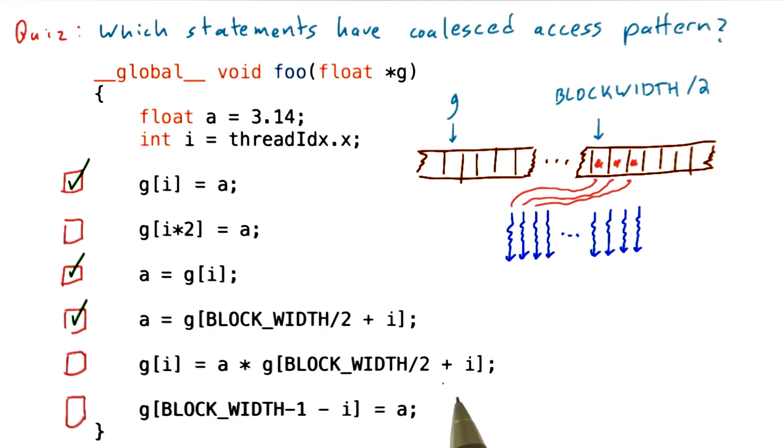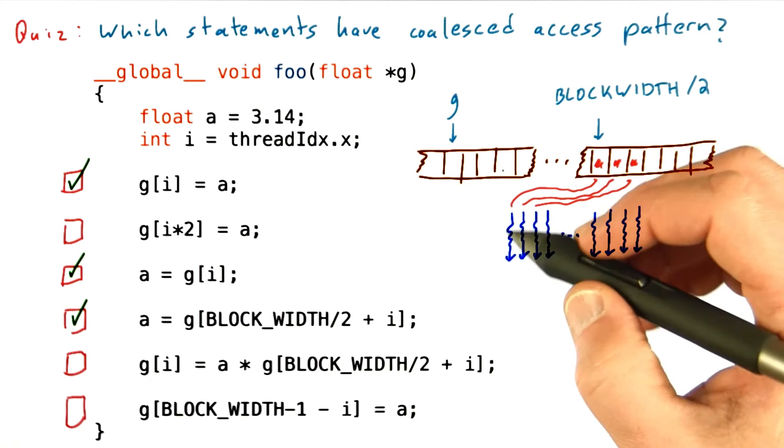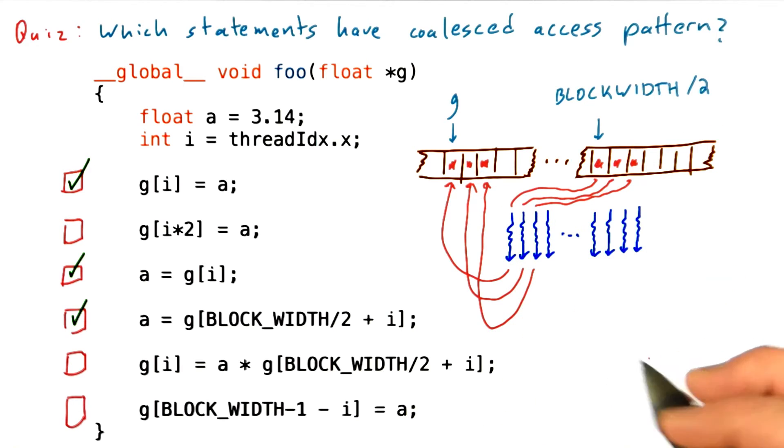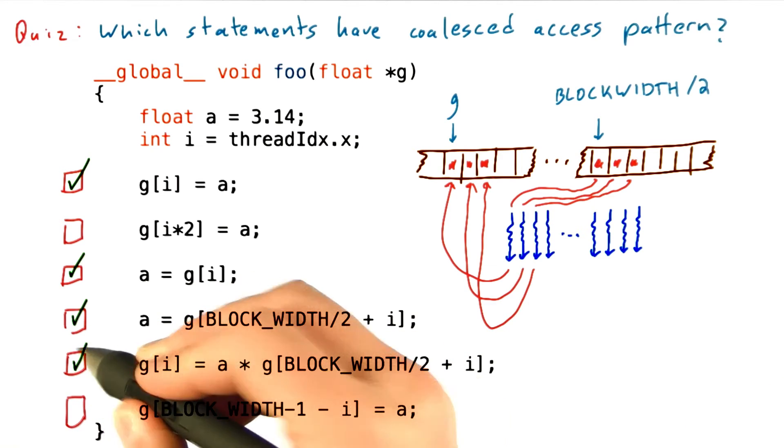And this example is simply the same pattern. We're going to read from this location which is defined by an offset plus the thread index. We're going to multiply it times a constant, and we're going to store the result back into a contiguous chunk of memory. So this is simply a coalesced read followed by a coalesced write. Therefore, the statement is coalesced.